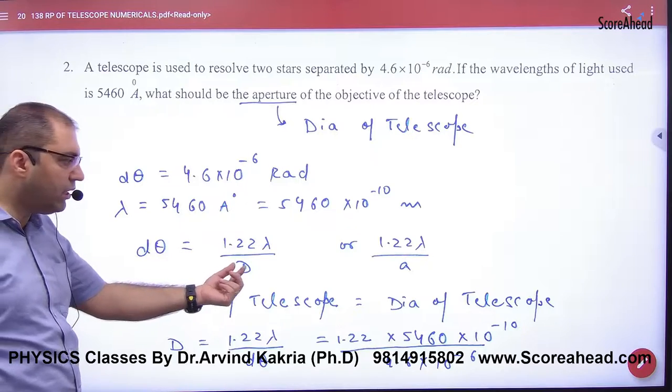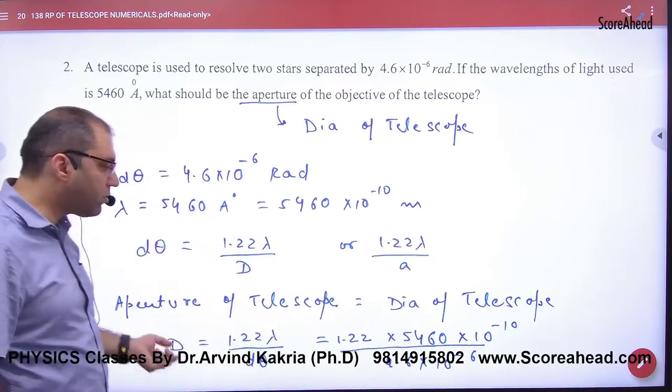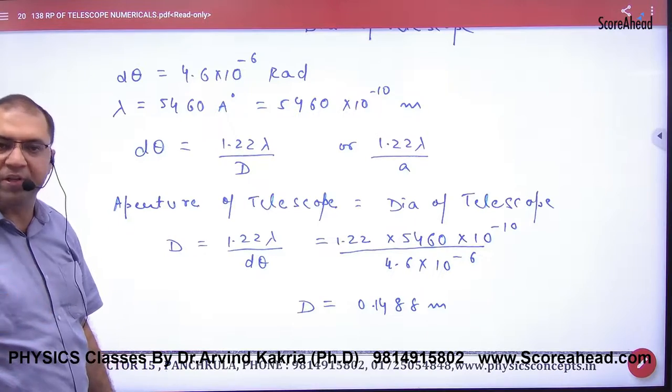So what did we do? Delta theta is known. D or A is the aperture. So cross multiply here. D or A can be calculated. Formula based question, right?